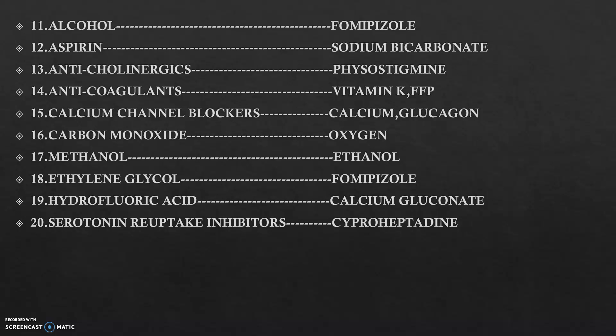Whenever poisoning happens with a calcium channel blocker, calcium or glucagon is added. In case of carbon monoxide poisoning, we obviously use oxygen, which is the best treatment — oxygen will competitively bind to hemoglobin. In case of methanol poisoning, the antidote is ethanol. Methanol is very dangerous, and ethanol is less dangerous than methanol.